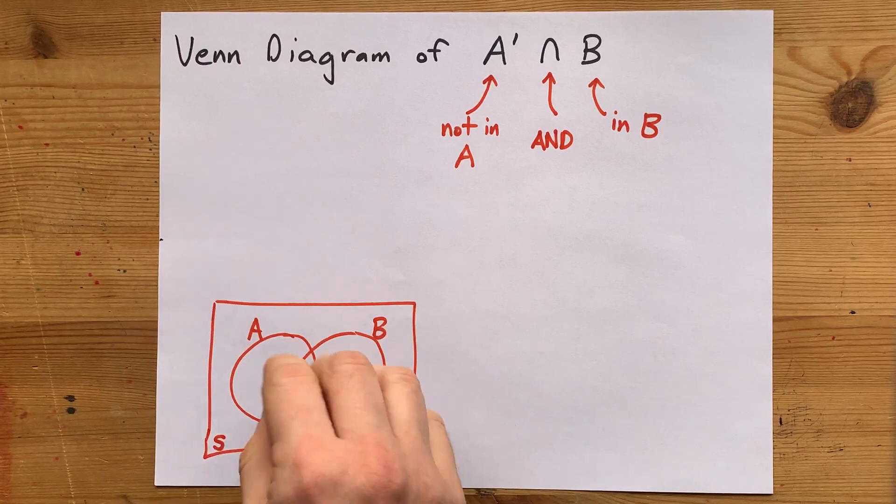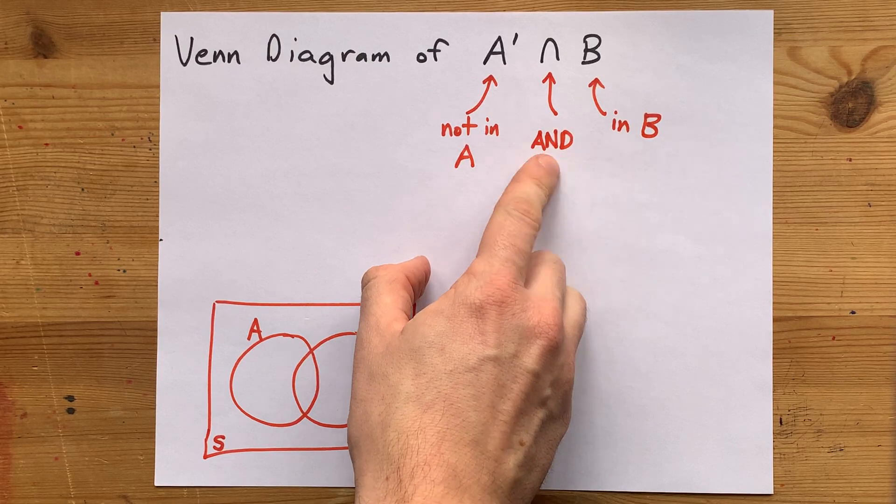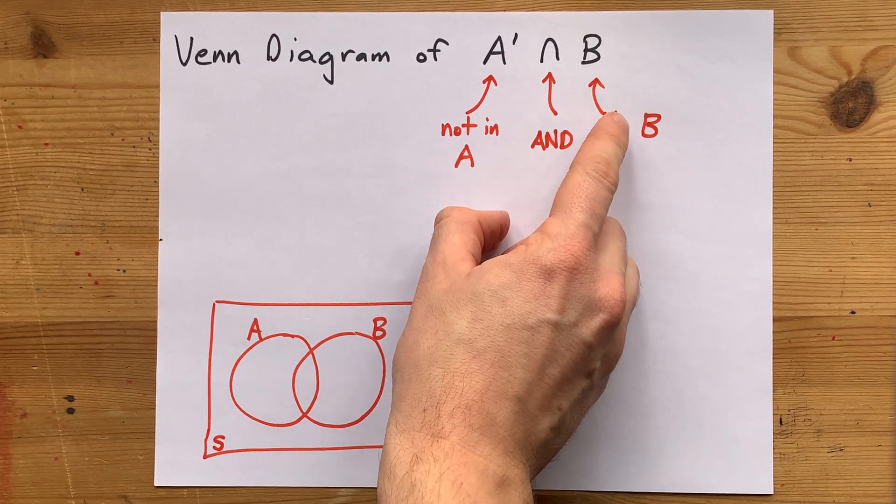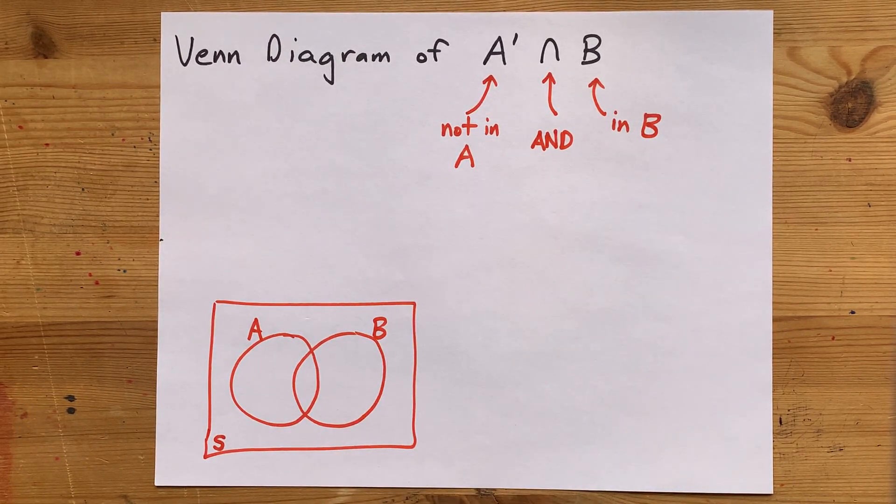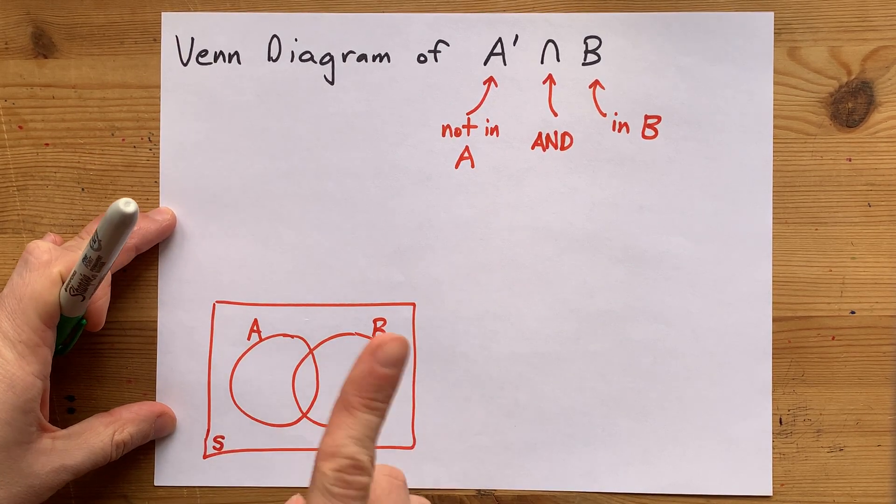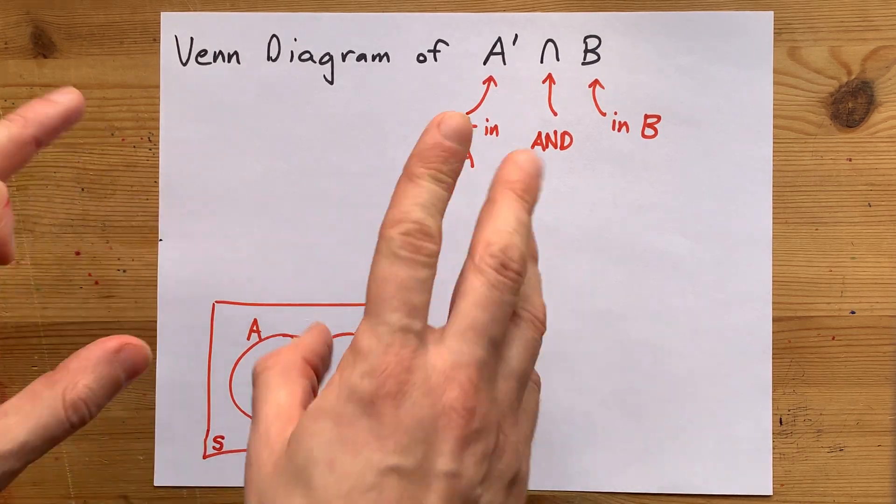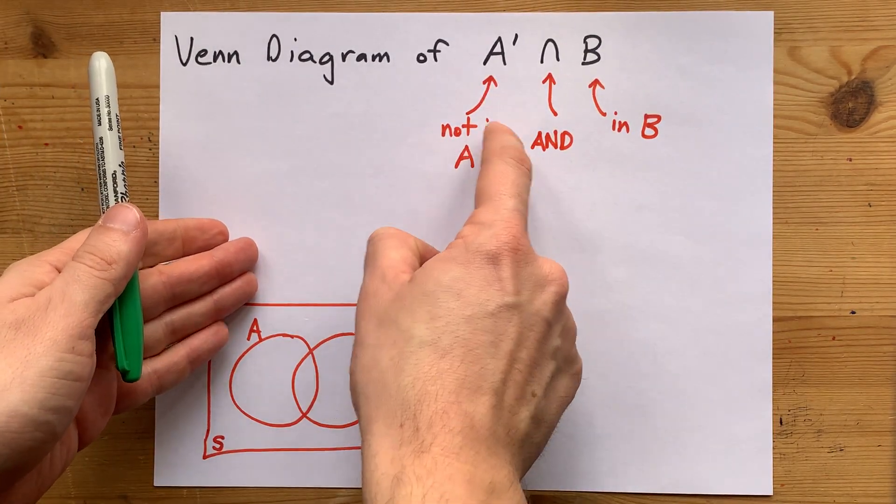So what we're looking to do on this diagram is shade in areas that are not in A, and also they have to be inside B as well. So this section and this section here are not allowed to be shaded because we require the shading to not be in A.